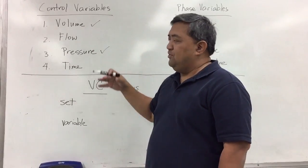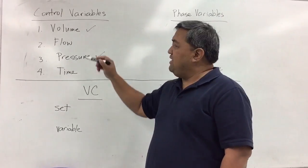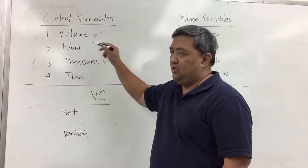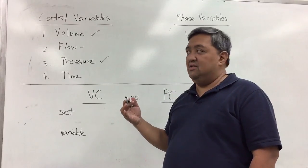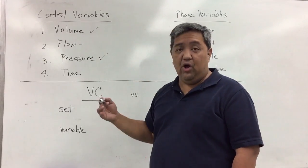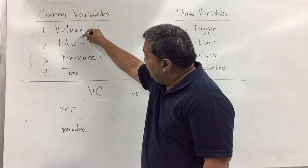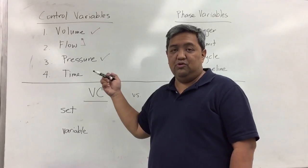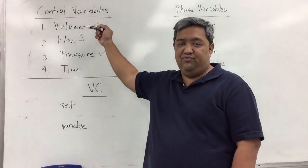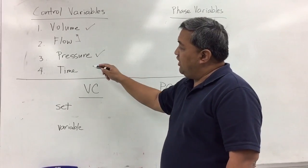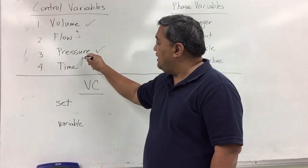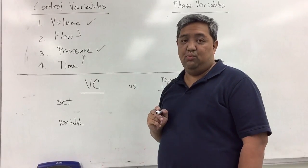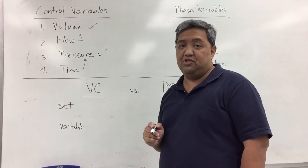A control variable usually is set. That means that if you have a flow controller, your flow is set and the control variable that has a set flow is basically volume control. So flow controller is usually associated with volume control. On the other hand, the time controller, since it is a set time, is usually associated with your pressure controller.